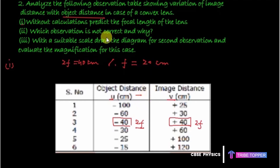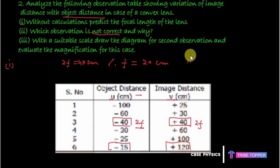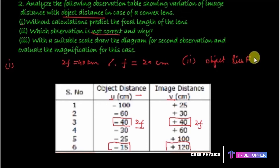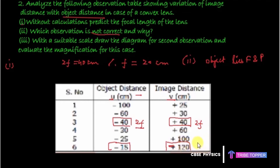The second part asks which observation is not correct and why. Looking at observation 6, it says object distance is −15 cm and image distance is +120 cm. When the object distance is −15 cm, which is less than the focal length, the object lies between the focus and the pole. In that case the image formed is virtual, erect, and enlarged on the same side of the mirror, so the image distance sign should be negative. The value +120 indicates the image is behind the mirror, which is not possible here. Therefore this observation is wrong.